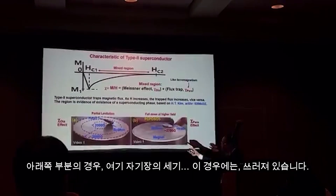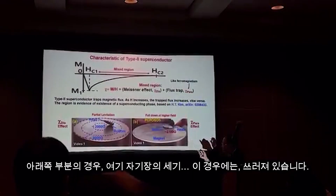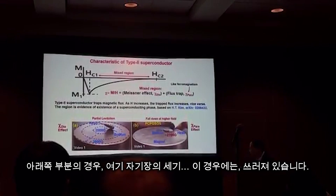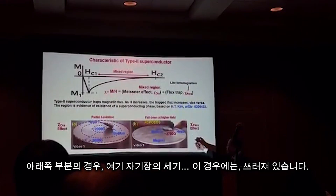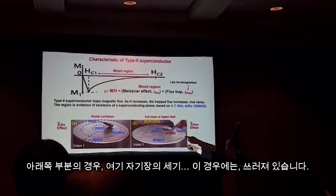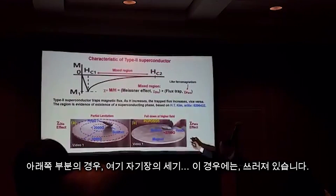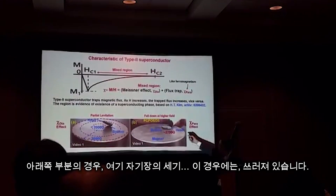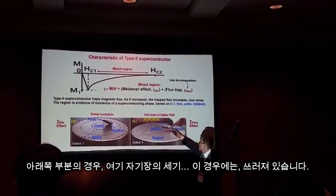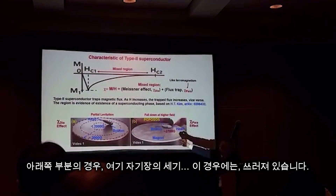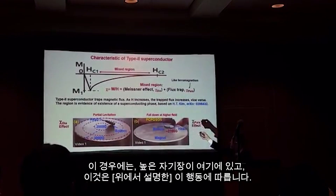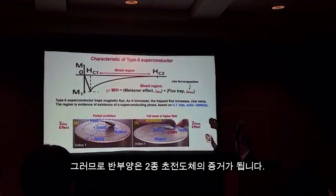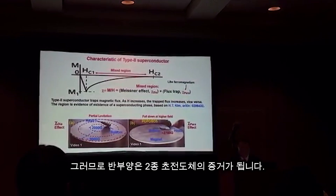The down part has magnetic field intensity. In this case, it falls down. At high magnetic field intensity, it follows this behavior. The vital levitation is the evidence of type 2 superconductor.